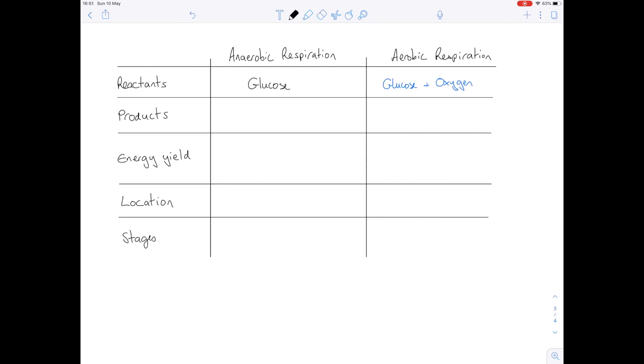What are our products of anaerobic respiration? Well in animals, remember our product is lactic acid. And in yeast, our product is ethanol and carbon dioxide. In aerobic respiration our products are carbon dioxide and water.